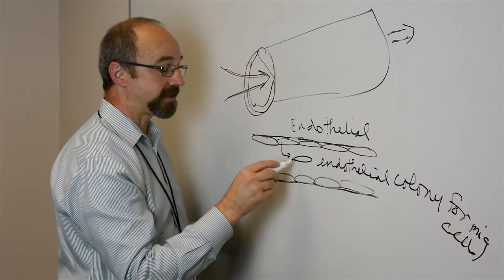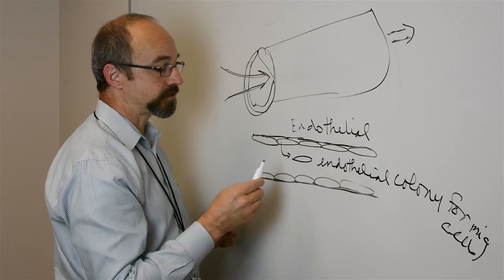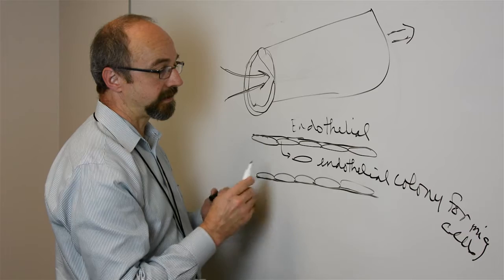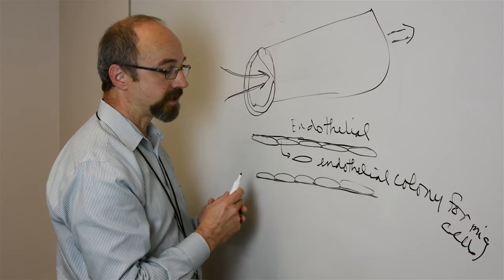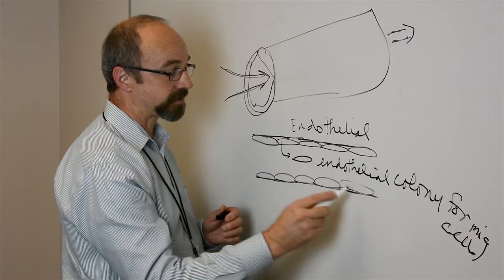One of the things we learned is these are very rare. So if we were going to try to use these cells in any kind of cell therapy for patients that had damage to their endothelium, we needed to find a way to get more of these cells.